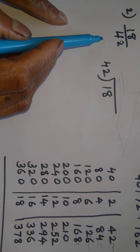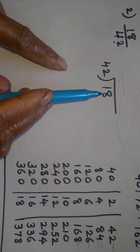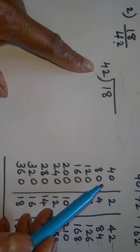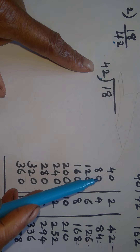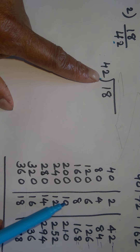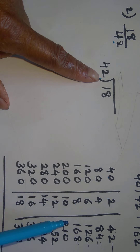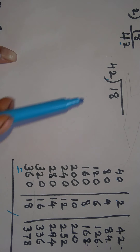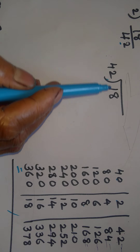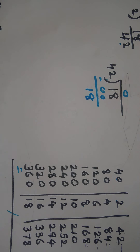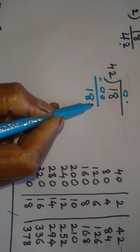Now let us try the next sum: 18 upon 42. We need to do numerator divided by denominator — 18 divided by 42. We must build the 42 times table: take the 40 table (4 times table with a zero) and the 2 times table and add them. 42, 84, and so on — this mental addition is very easy.